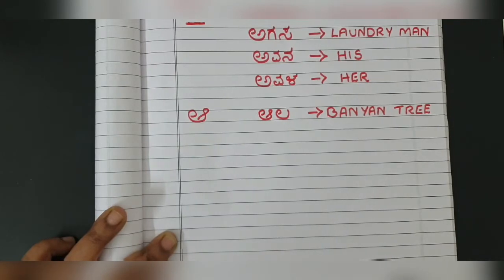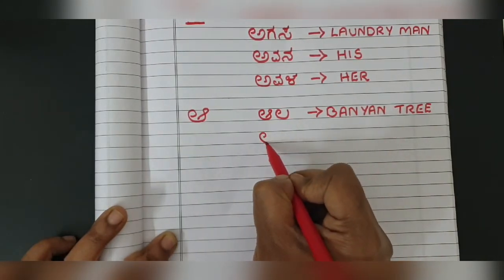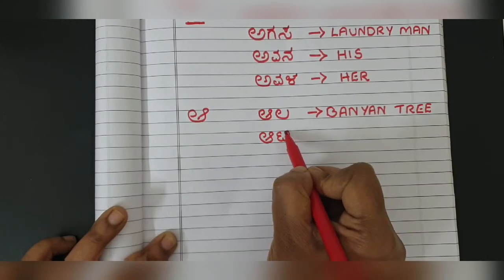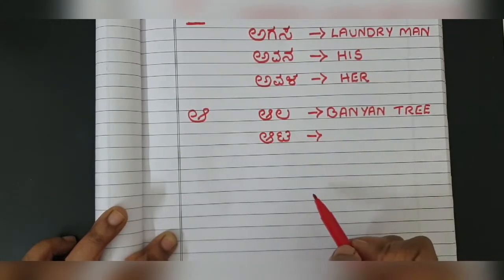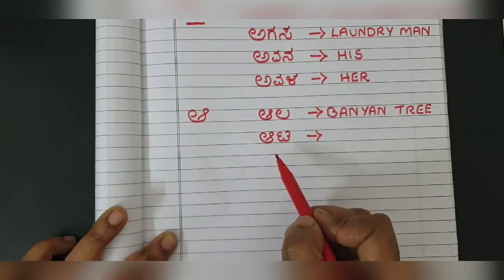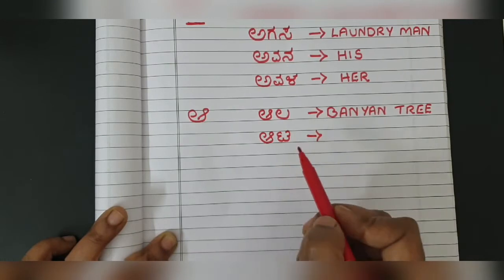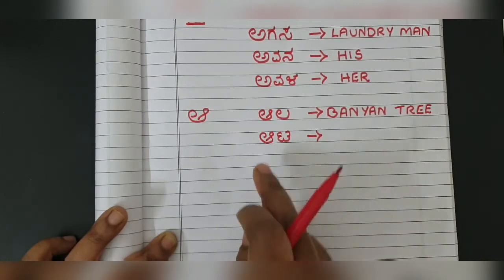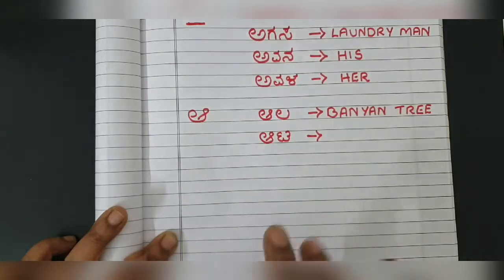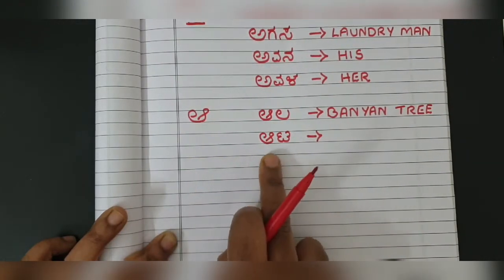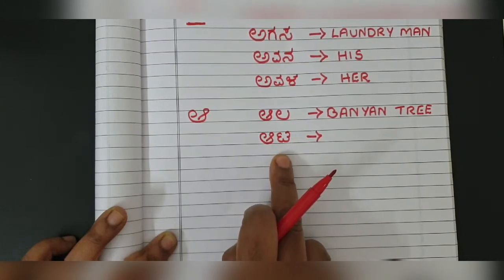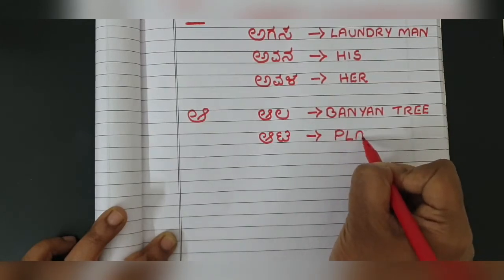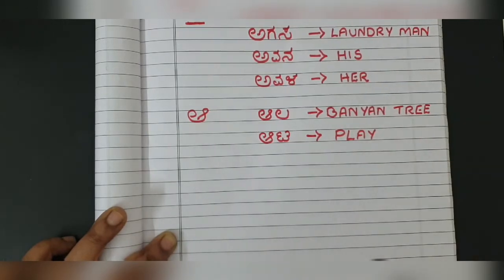The next word is 'āta' — Ā-T-A. The reason I'm writing while reading is so you will focus on writing at the same time and remember it better. It's always good to write and read together — you will learn faster. 'Āta' means play.